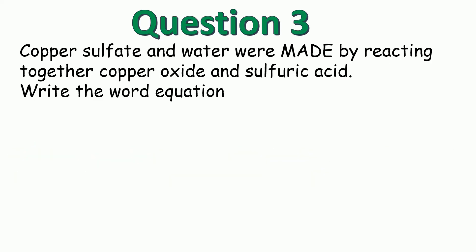This question is slightly trickier in how it's worded, so read the question carefully. Copper sulfate and water were made by reacting together copper oxide and sulfuric acid. Write the word equation. Have a go at this one then check back in with the video. We put the arrow in the middle. This time copper sulfate and water are made, so they're the products, so we're going to put those on the right hand side. And we've made those by reacting together copper oxide and sulfuric acid, so they're the reactants that need to go on the left.